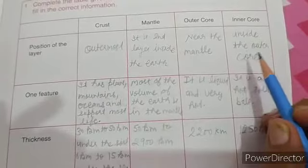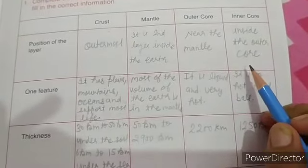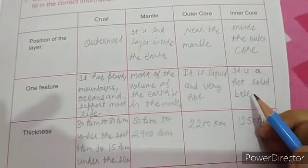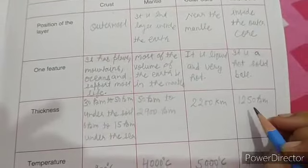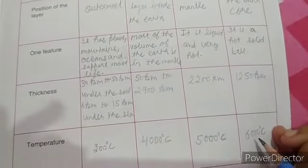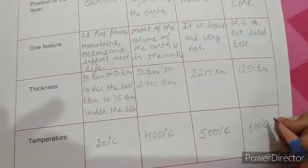Next is inner core. This is inside present. It is hot solid ball. The thickness is 1250 km. Temperature is 6000 degree Celsius.